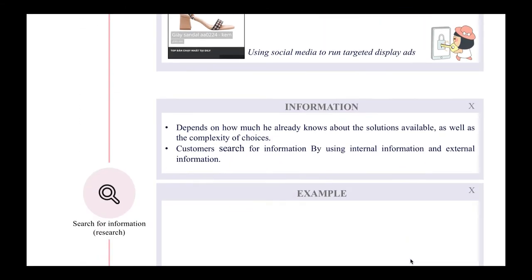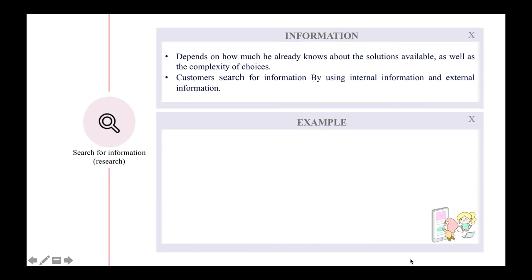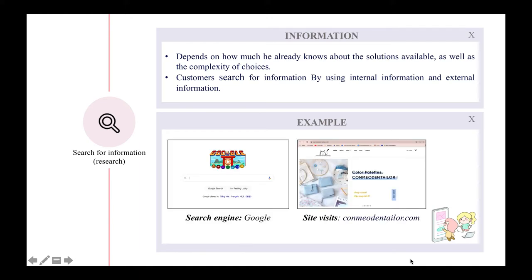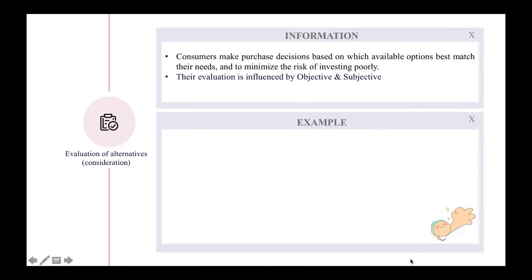The next stage is search for information or research. This stage depends on how much the customer already knows about available solutions and the complexity of choices. Customers search using internal information like previous knowledge, or external information like reviews. Online marketing communication can use search engines and site visits to support this stage. For example, customers may use Google and visit sites like khanmeldentaylor.com.